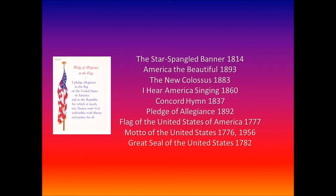Pledge of Allegiance. The Pledge of Allegiance was first published on September 8, 1892, in the Youth's Companion magazine. The original pledge read as follows: 'I pledge allegiance to my flag, and the republic for which it stands, one nation, indivisible, with liberty and justice for all.' Children in public schools across the country recited the pledge for the first time on October 12, 1892, as part of the official Columbus Day observances to celebrate the 400th anniversary of his discovery of America. In 1942, by an official act, Congress recognized the pledge.